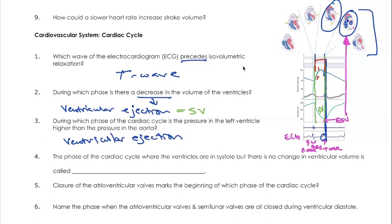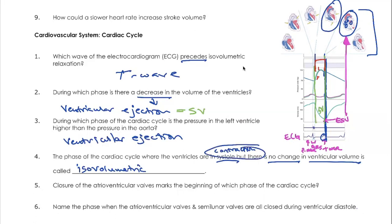Number four asks about the phase of the cardiac cycle where the ventricles are in systole — another word for contraction — but there's no change in ventricular volume. It's going to be isovolumetric because that means no change in volume. Since the ventricles are in systole, we know it's isovolumetric contraction.